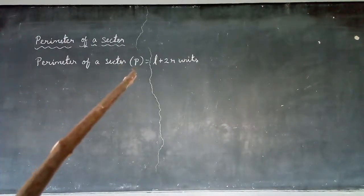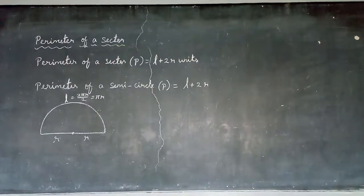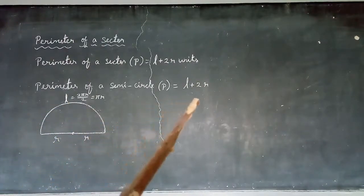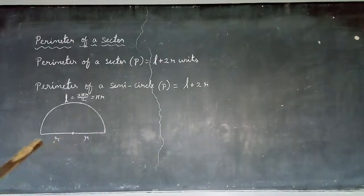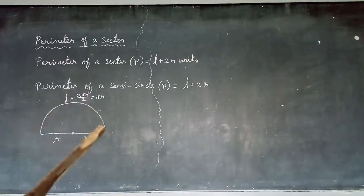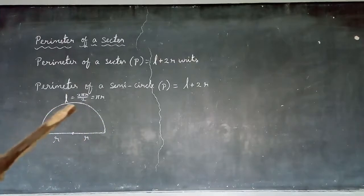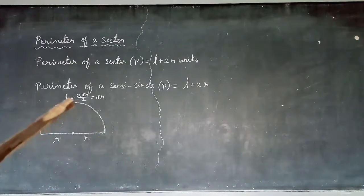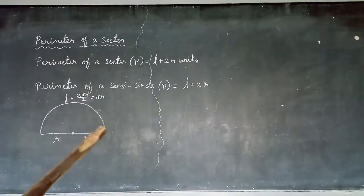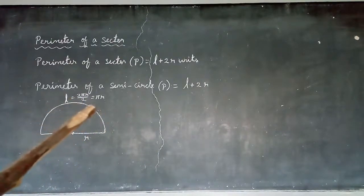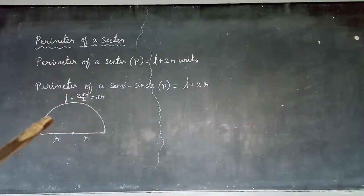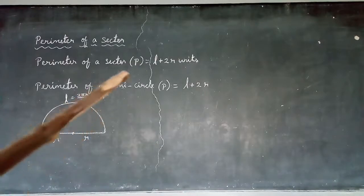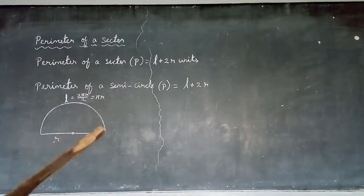The perimeter of a sector is denoted by capital letter P. Now we will calculate the perimeter of a semicircle. A semicircle is half of a circle. The length of the arc of a semicircle is half the circumference of the circle. Since circumference equals 2πR, dividing by 2 gives arc length equal to πR.